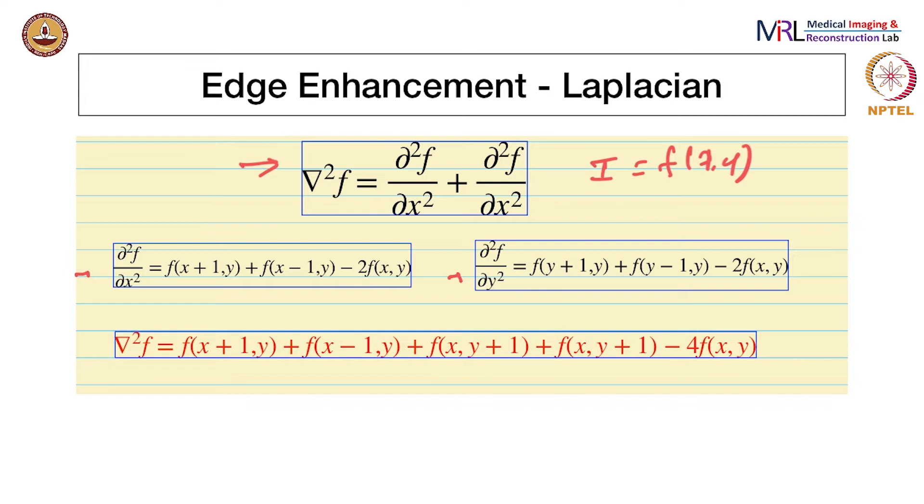Again, this emerges from finite difference schemes. You start off with Taylor series expansion and then derive this. I'm not going to derive this but just show you the expression. Del square f is the sum of del square f by del x square and del square f by del y square. This is the final expression for the Laplacian of an image.